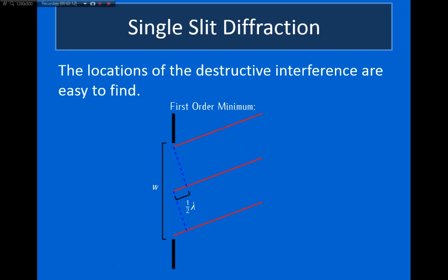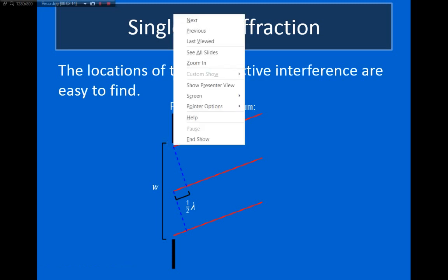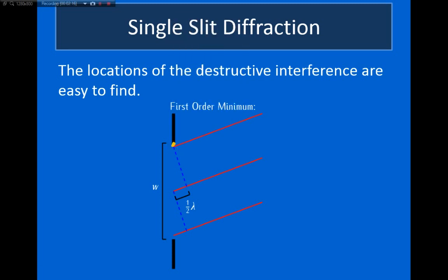The idea behind this is that the light that passes through the very top part of the slit needs to interfere destructively with the light that passes through the middle of the slit. The reason that this is the condition is that if I consider a point that's just below the top part of the slit, then it'll interfere destructively with the point that's just below the center of the slit.